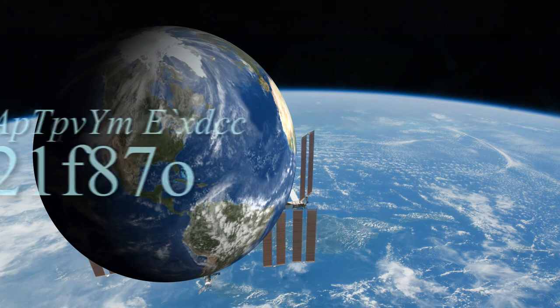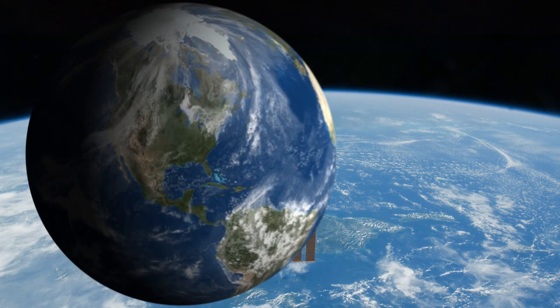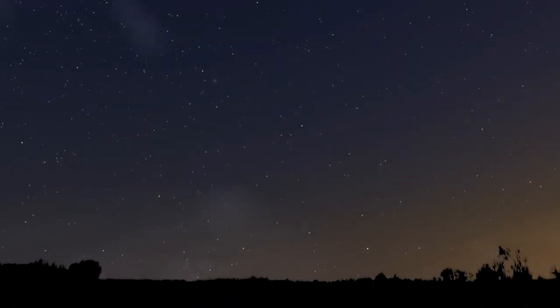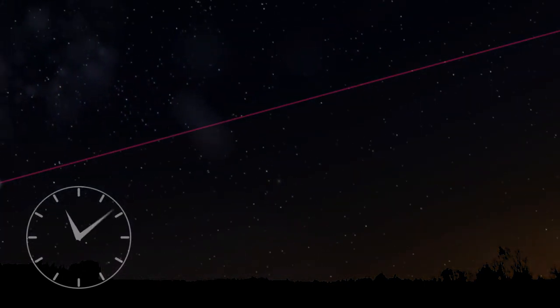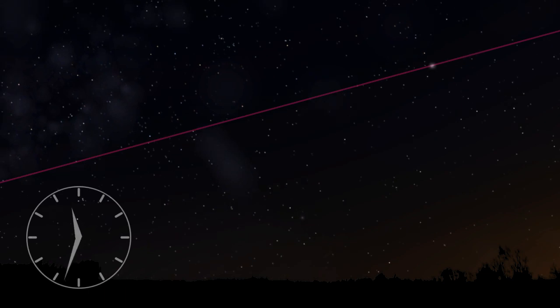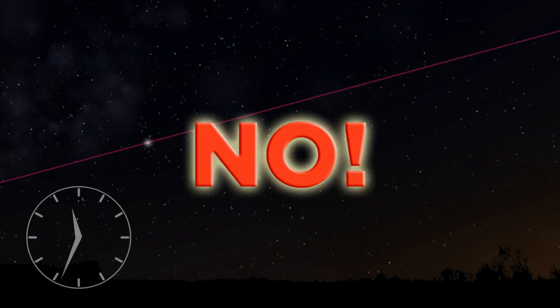For the geocentrist, observing the ISS should be an easy experience for those along its flight path. Since Earth supposedly doesn't rotate, it should take the same path overhead every time. All the geocentrist needs to do is stand under the orbital path of the ISS, and watch it pass overhead every 92 minutes and 46 seconds.